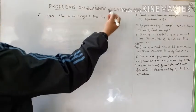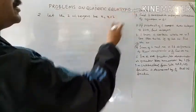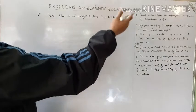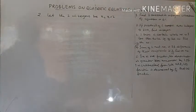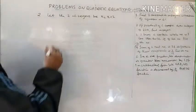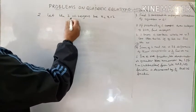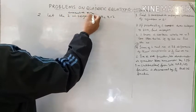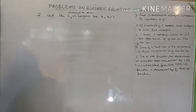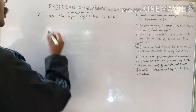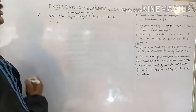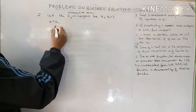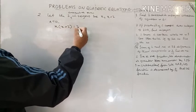If the question says two consecutive even or odd integers, take x and x plus 2. If there's one more, take x plus 4. If it says only consecutive, take x, x plus 1, x plus 2, and so on — difference of 1. So let the two consecutive even integers be x and x plus 2. According to the question, their product equals 224, so x times (x plus 2) equals 224.